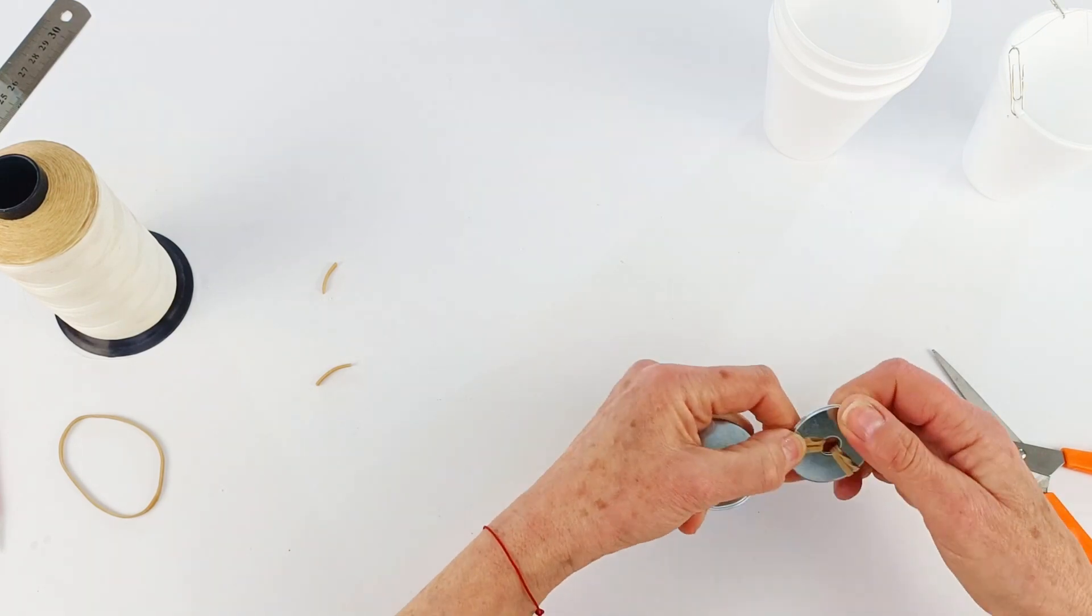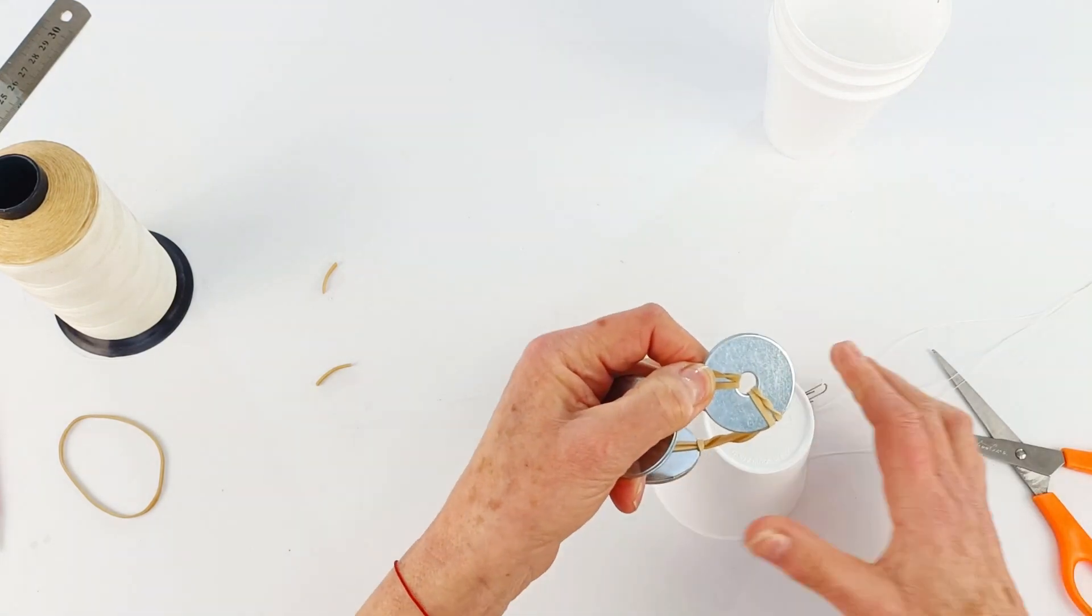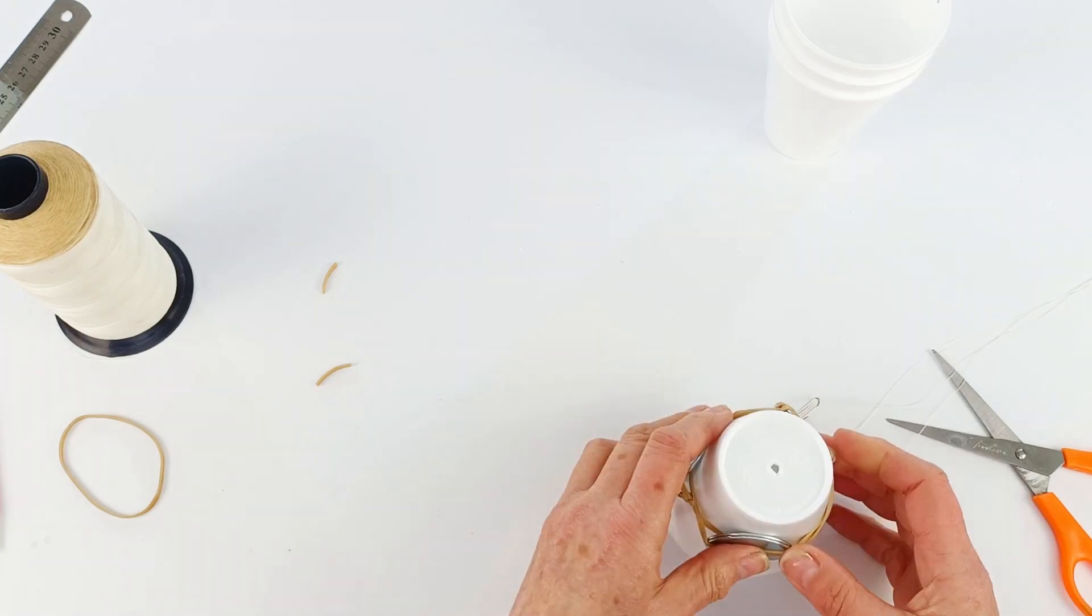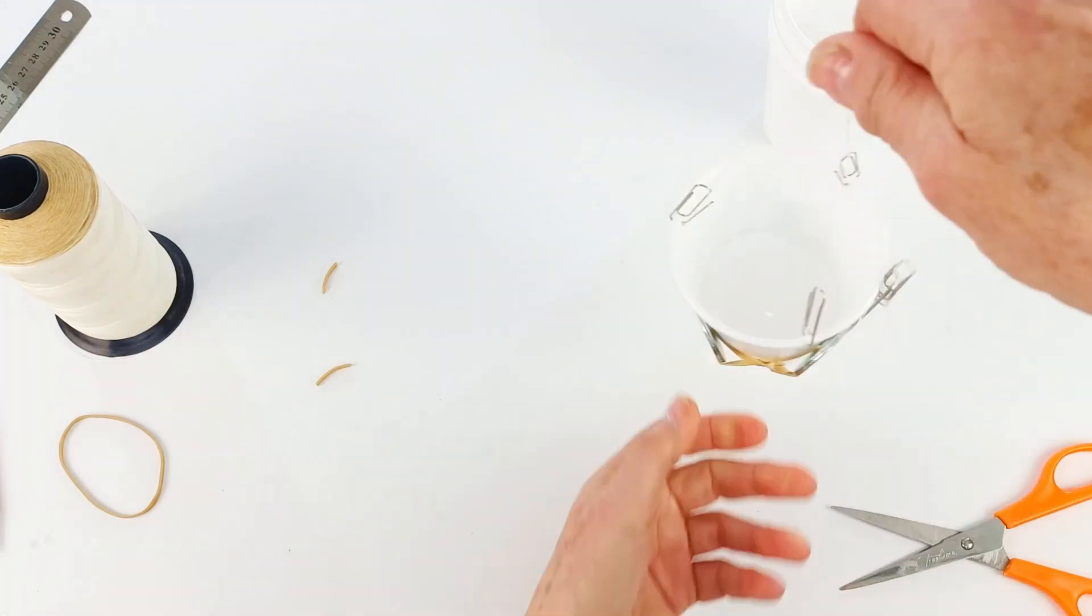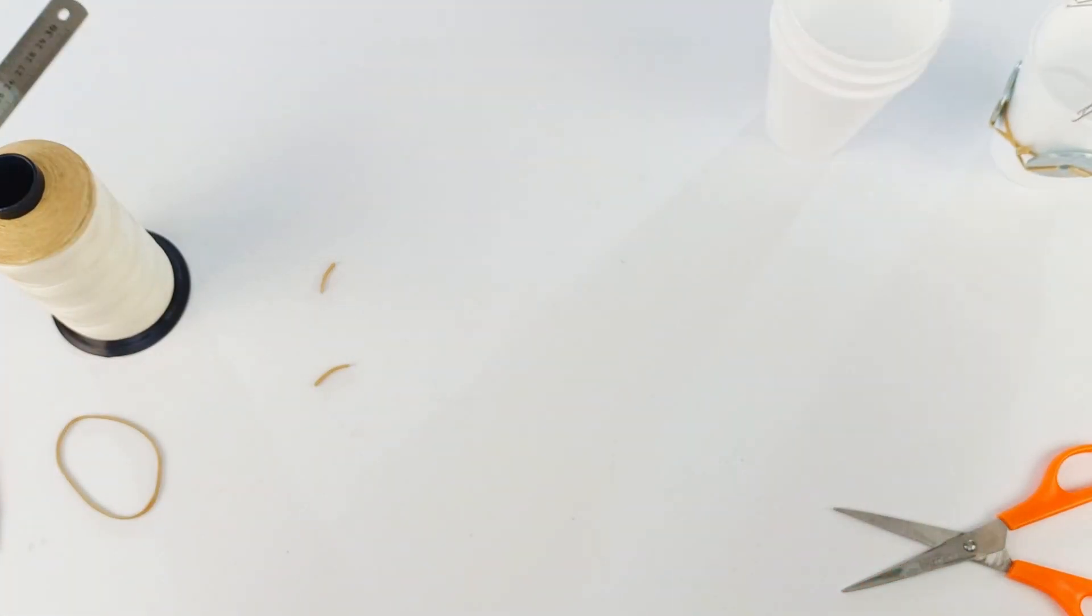So there we go, it's all finished. Now we'll show you how it just slides onto the cup and then in this case it's super easy to transfer it from cup to cup as we change colors. So there we go.